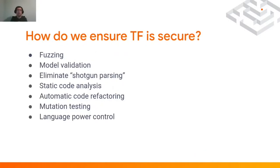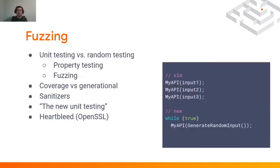So how do we ensure TensorFlow is secure? We have several options, listed roughly in order of frequency. Let's begin first with fuzzing. In order to begin with fuzzing, we have to consider the dichotomy between unit testing and random testing.